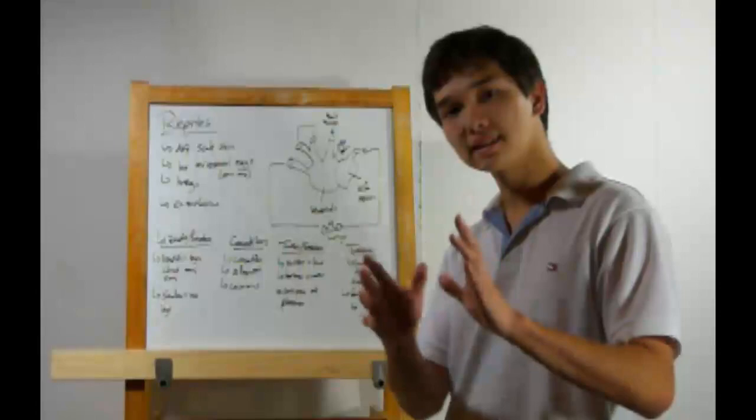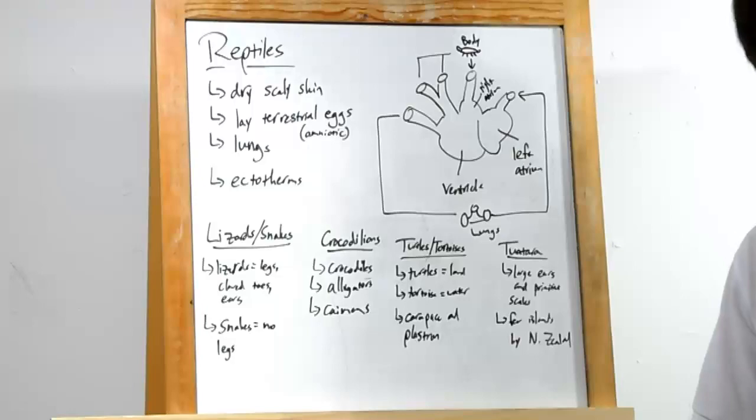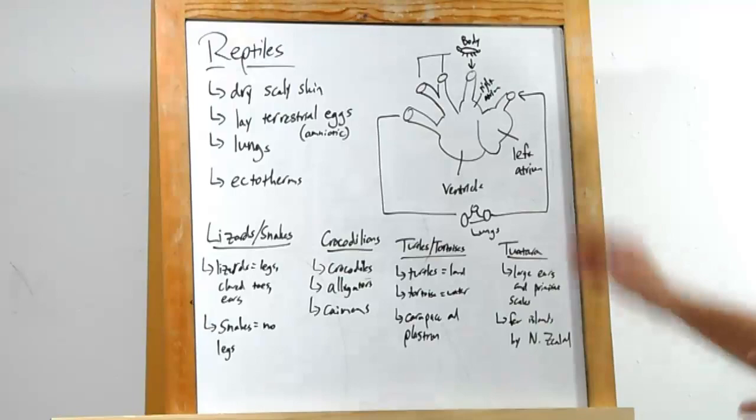Now let's look at the circulatory system. It's still a closed circulatory system. Blood doesn't leave it, it's still a double loop. One loop through the lungs, the other loop through the body. But there have been some changes in the heart.